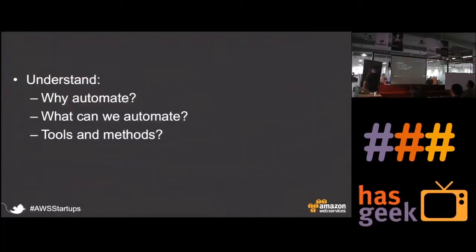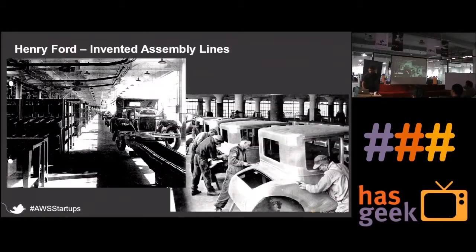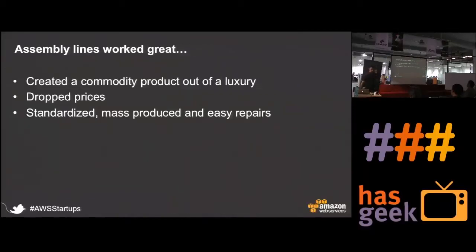Let us now jump into the automation aspects — why automate, what can we automate, what are the tools and methods. The Ford factory from over 100 years ago is a great analogy: Ford used to manufacture cars in assembly lines — an excellent concept that helped create a commodity product out of a luxury product, dropping prices so it could be mass-produced.